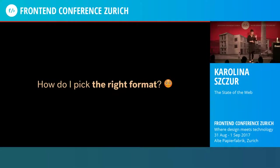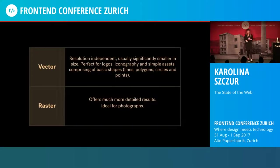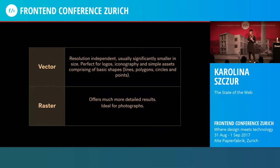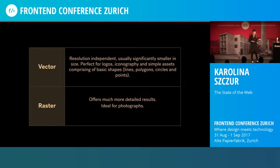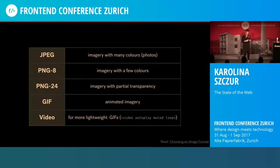Vector graphics are usually resolution-independent, very small in size, and perfect for logotypes, icons, and simple assets comprising simple shapes like polygons, circles, or lines. Raster imagery, on the other hand, is perfect for photos because it offers much more detailed imagery. If I definitely need a raster image, I still have to pick between JPEGs, PNG8, PNG24, GIFs, or videos. JPEGs are great for many colors, meaning usually photography; PNG8 for imagery with few colors; PNG24 for anything with transparency; GIFs for animated imagery; and sometimes we can swap GIFs for videos, which are more lightweight.